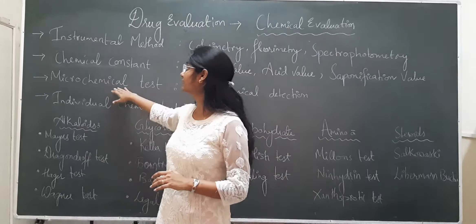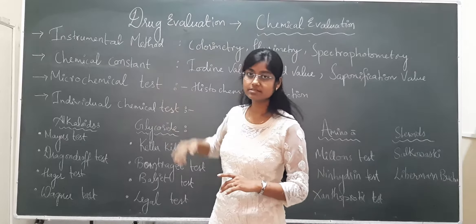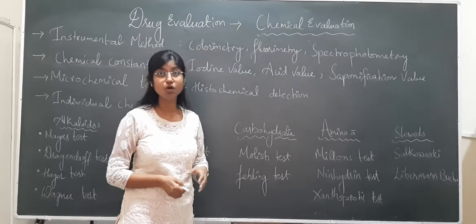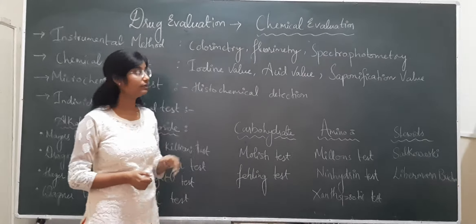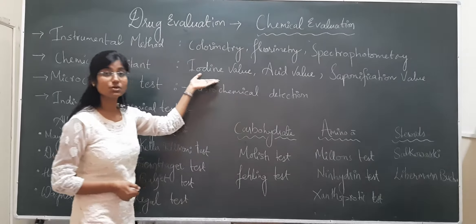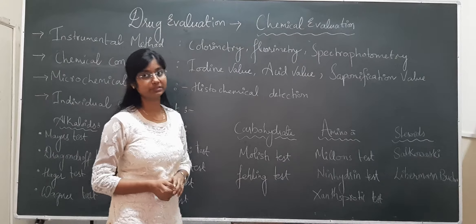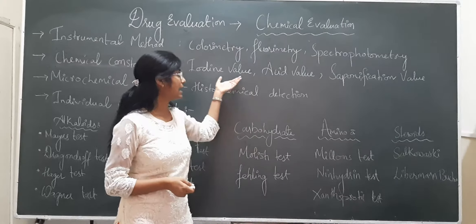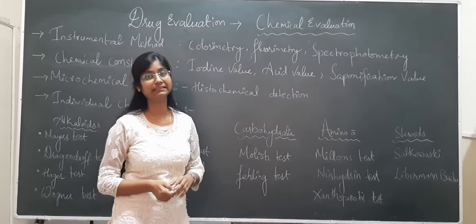Coming to the second point: chemical constants. In our biochemistry subject, chemical constants specifically belong to lipids and fat-soluble drugs. Whatever fat-soluble or lipid profile drugs are there in pharmacognosy, these tests are for them. Examples include iodine value, acid value, and saponification value. The details of these tests will be covered in biochemistry. For here, just remember that chemical constants apply to oils and lipid category plants.